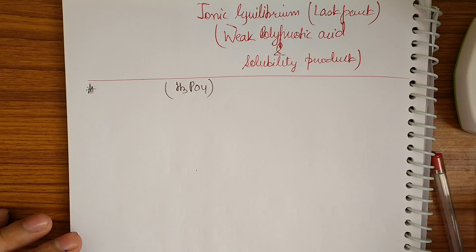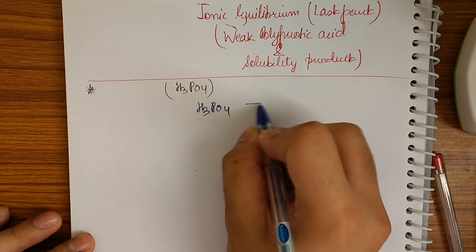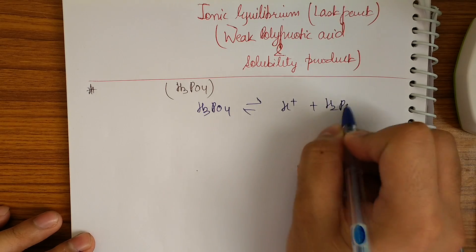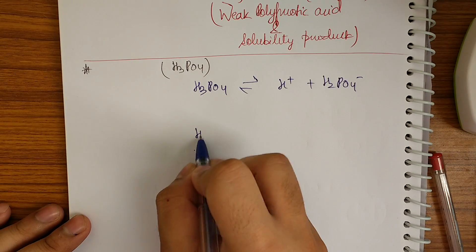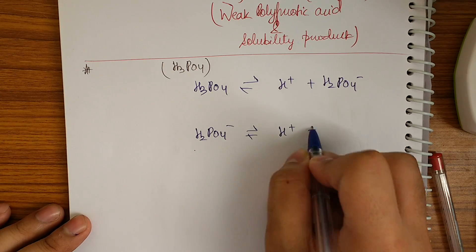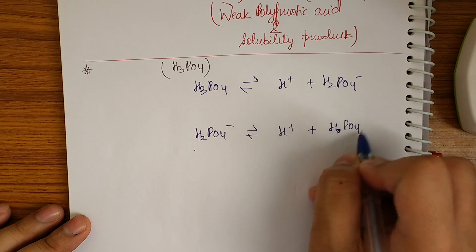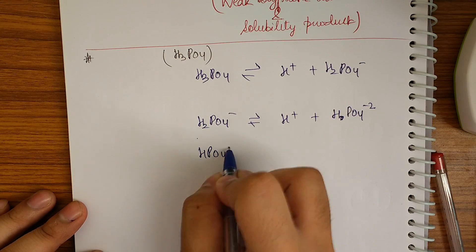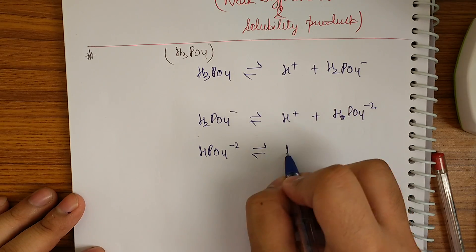Let me take H₃PO₄ as an example. To dissociate it, first remove one proton to get H⁺ plus H₂PO₄⁻. The second step dissociates one more proton to give H⁺ plus HPO₄²⁻.